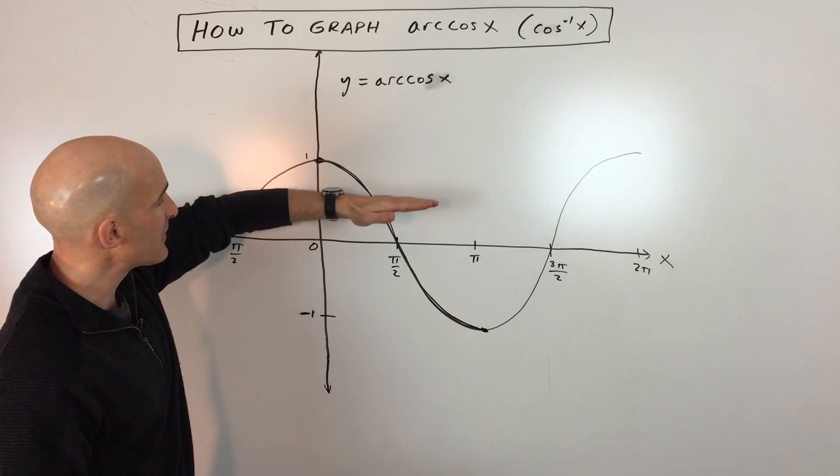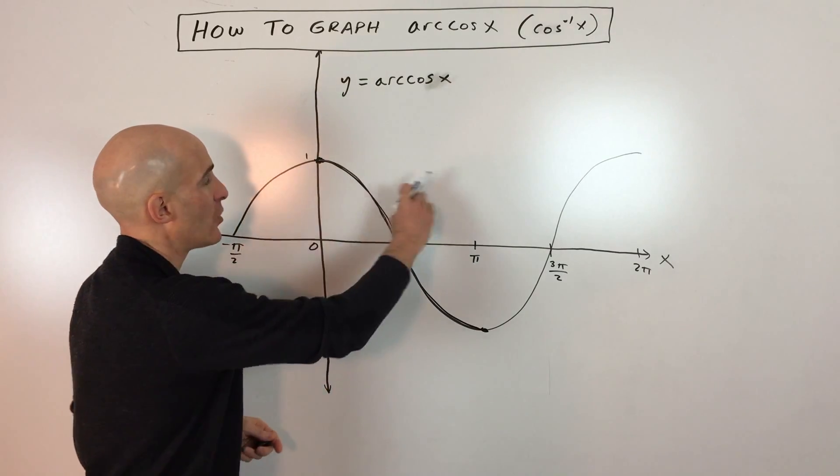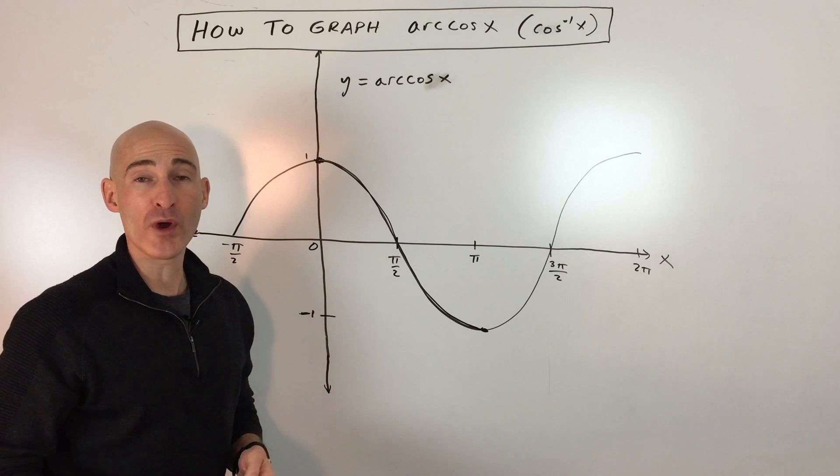And the reason that it isn't is you can see that when you draw a horizontal line like so, it's intercepting the graph at more than one point.